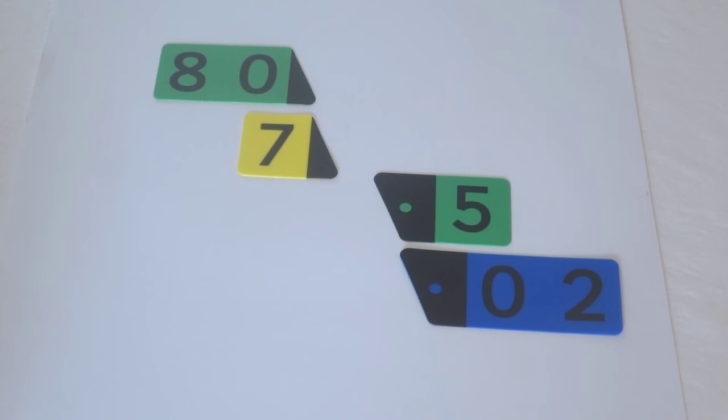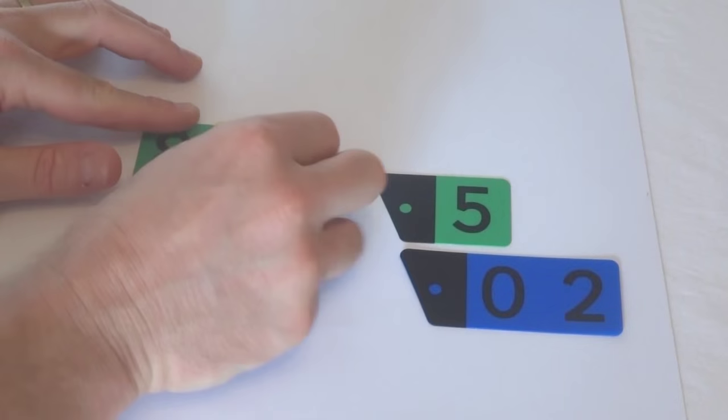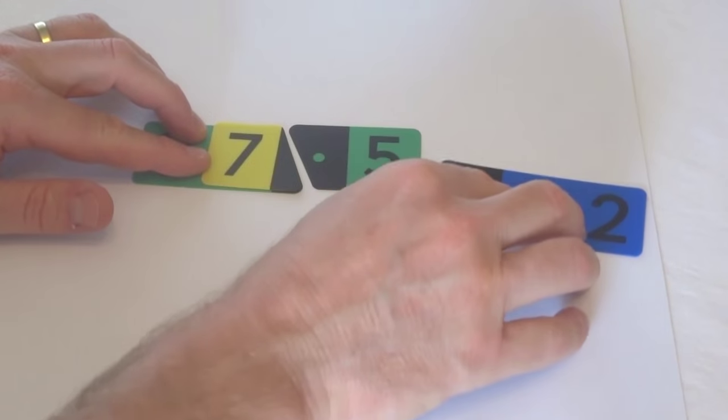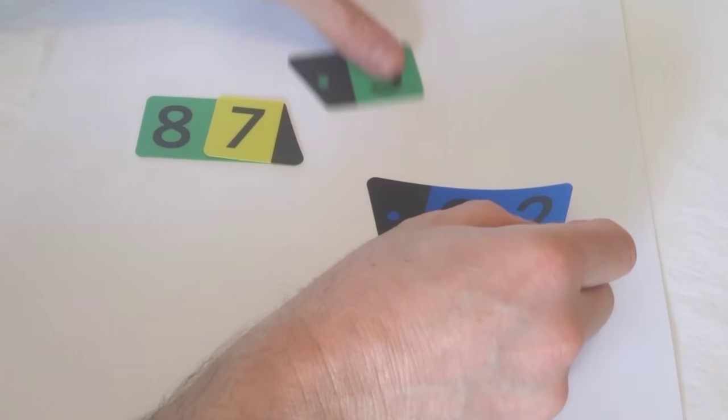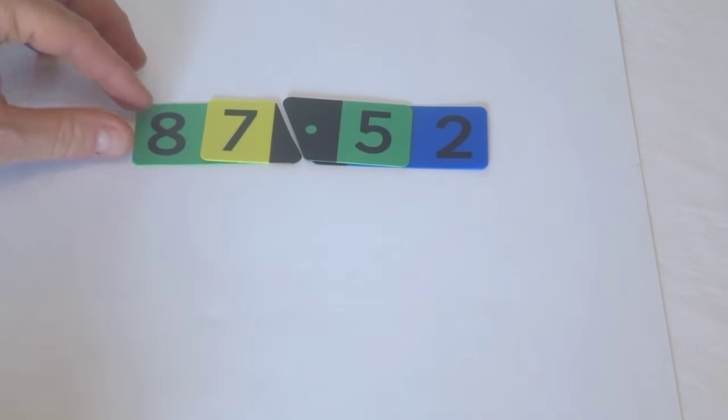So when we put these pieces together we can create a number. Now this one sits on top like this. You see how the decimal point shows in there. And so now I have eighty-seven and fifty-two hundredths.